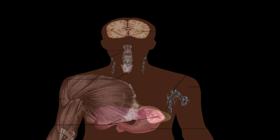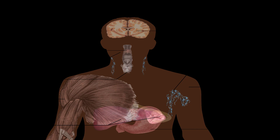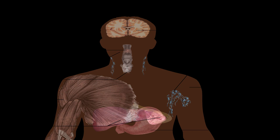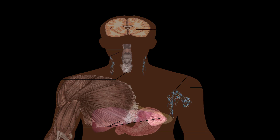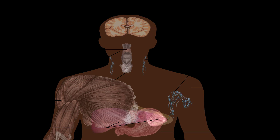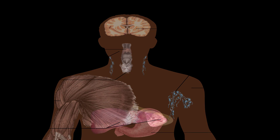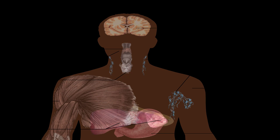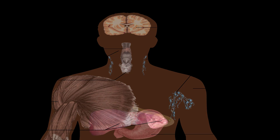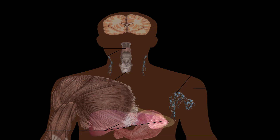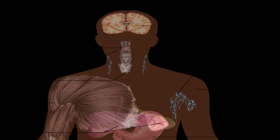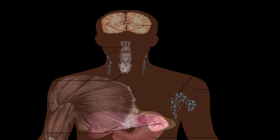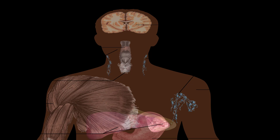How is acute HIV infection diagnosed? A healthcare provider will perform a series of tests to check for HIV if the virus is suspected. A standard HIV screening test won't necessarily detect acute HIV infection, as many HIV screening tests look for antibodies to HIV rather than the virus itself. Antibodies are proteins that recognize and destroy harmful substances such as viruses and bacteria.